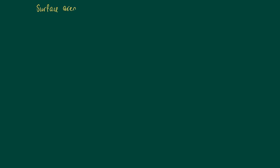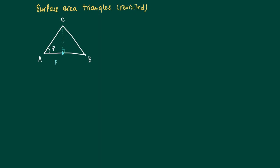I'm going to apply these ideas of projection to the calculation of the area of triangles. Here we have a triangle with points A, B, and C. AB makes an angle of phi with the line segment AC, and we may calculate the projection of the vector AC on AB.